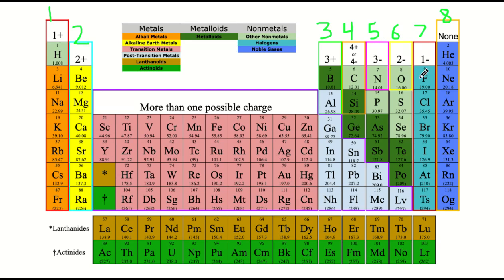Oxygen could gain 2, and fluorine and all the halogens could gain 1. That matches up to your valence electrons. If they're losing valence electrons, then the charge is positive, and it's the same as the number of valence electrons that they lost. If they're gaining valence electrons, then the charge is negative, and it's the same as the number of electrons that they gained.